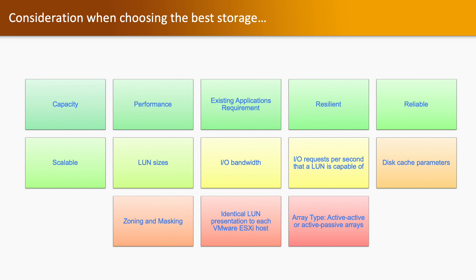Now, considerations when choosing the best storage. When you are going to choose storage, you'll have to keep in mind a few things: capacity — what capacity you require; which kind of performance you require; existing application requirements if any dependency is there; resilience — it should be reliable and scalable; LUN size what you require; IO bandwidth; IO requests per second that a LUN is capable of; disk cache parameters; zoning and masking; identical LUN presentation to each ESXi host; and array type. These are the considerations when choosing the best storage for your environment.